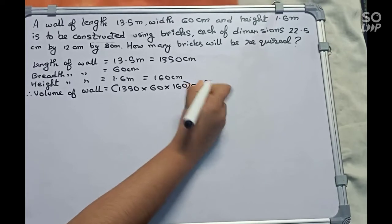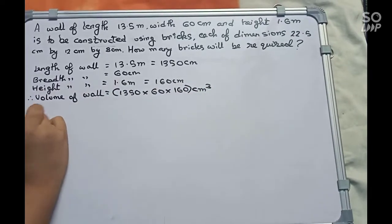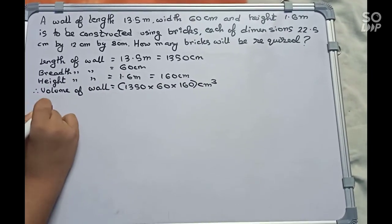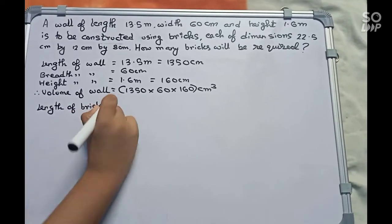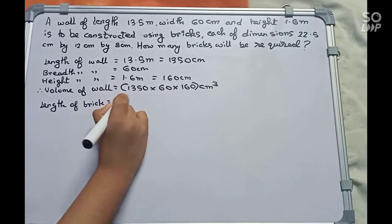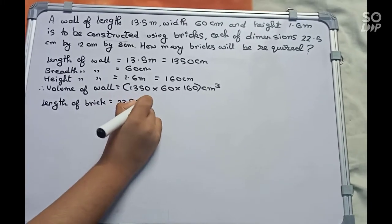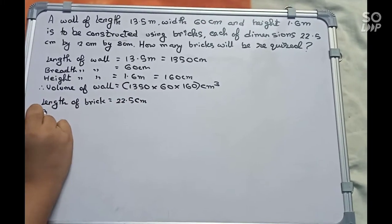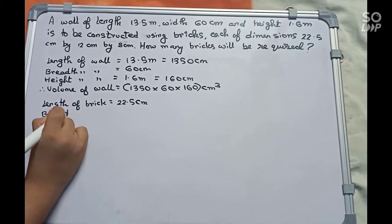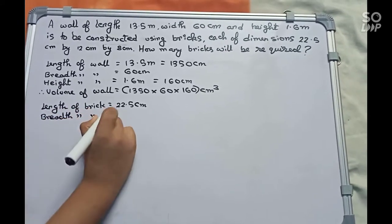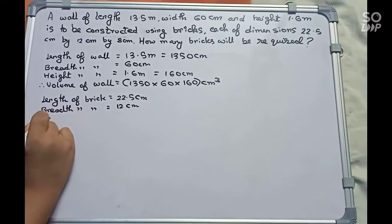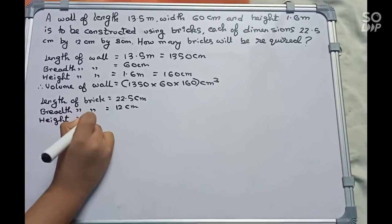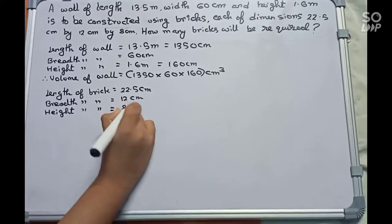Volume of wall equals 1350 × 60 × 160 cm³. We'll keep it like this for now. Now let's find the brick dimensions: length of brick equals 22.5 cm, breadth of brick equals 12 cm, height equals 8 cm.